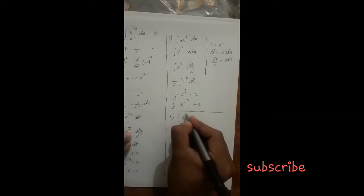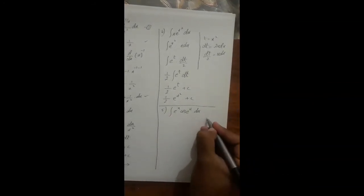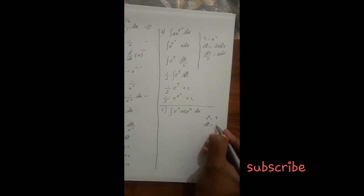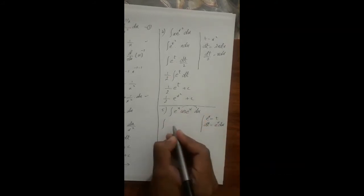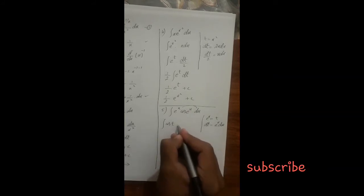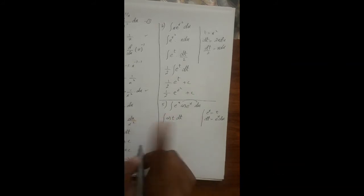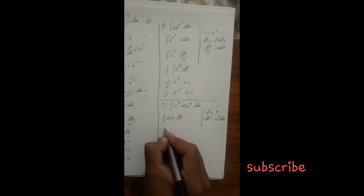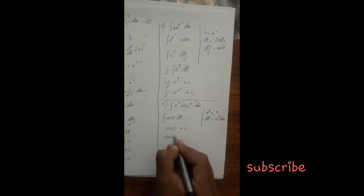Next question: integrate e^x times cos(e^x) dx. In this question, we first put t equal to e^x. Then dt equals e^x dx. Replacing e^x dx with dt and cos(e^x) with cos(t), the integral becomes the integral of cos(t) dt. Since the integration of cosine is sine, the result is sin(t) plus c. Replacing t: sin(e^x) plus c. This is the solution.